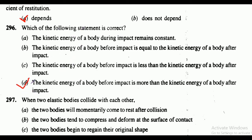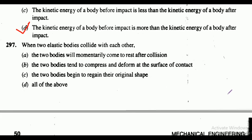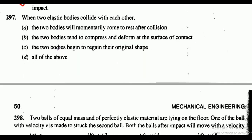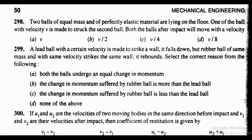Question 297: when two elastic bodies collide with each other — options are: the two bodies will momentarily come to rest after collision; the two bodies tend to compress and deform at the surface of contact; the two bodies begin to regain their original shape; or all of the above. The correct answer is option D, all of the above.